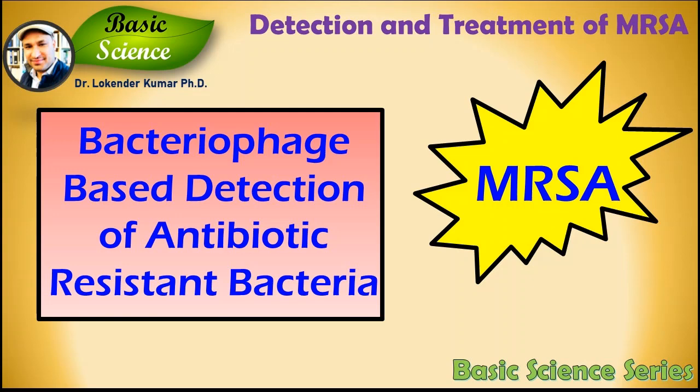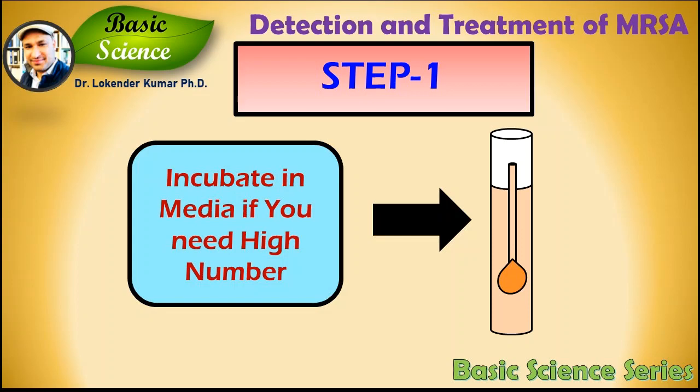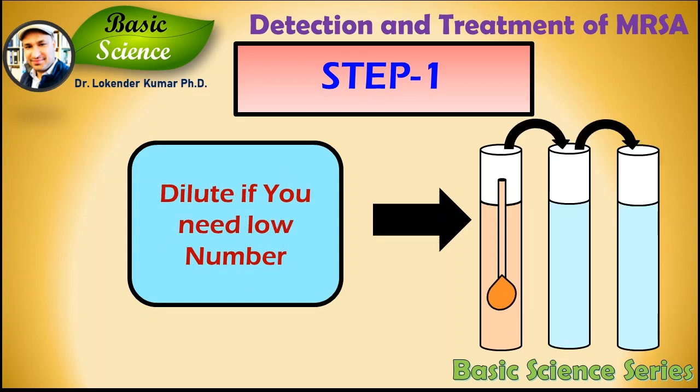I will explain this by taking the example of MRSA with the following steps. Step 1 is bacterial sample preparation. For phage replication, bacteria need to be present in a specific amount so that bacteriophages can infect those bacterial cells. If bacteria are present in low numbers, the sample needs to be incubated in media to increase the number of bacterial cells. If bacteria are present in very high amounts — as is usually the case with urine samples — the bacteria needs to be diluted. Preliminary quantification can be done using UV spectrophotometry; please refer to episode 14 for details.